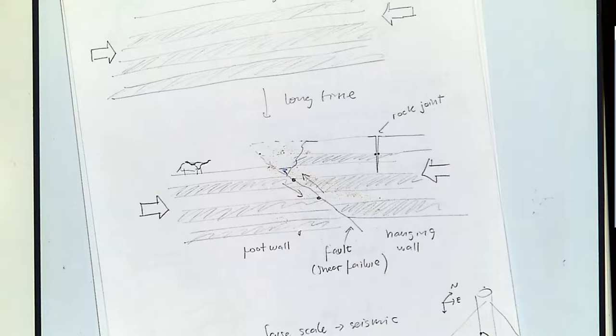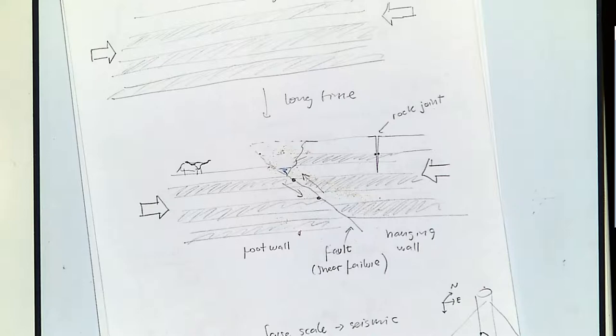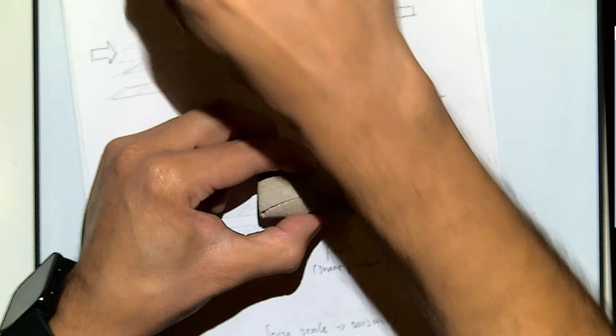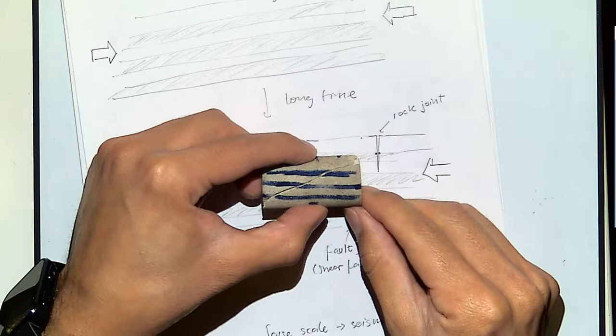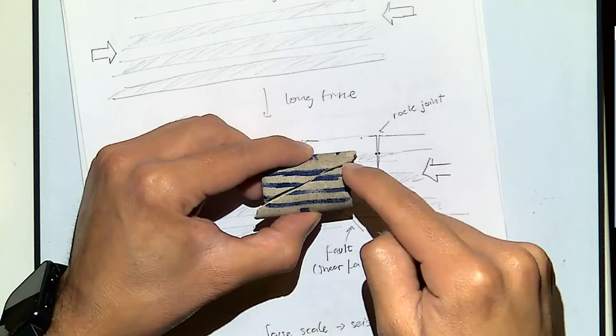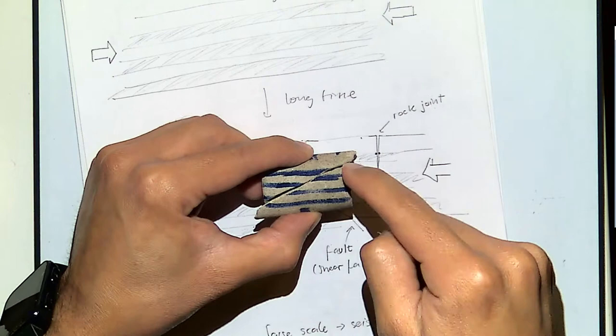I wanted to bring another rock from my lab — it's a shale with very marked sedimentary layers. Let me just sketch some layers here to give you the idea about what's going on. The main idea here is that if we have layers like this and there is a shear fracture, those layers are going to be displaced with respect to each other. How the fault forms and its orientation is going to depend on the orientation of the stresses.